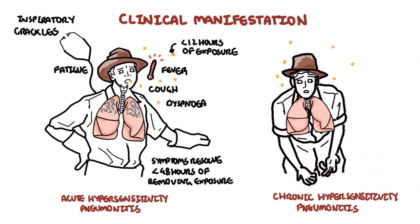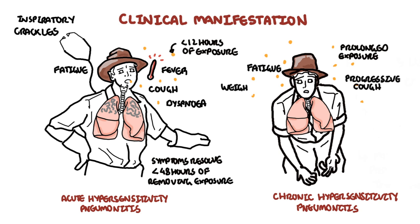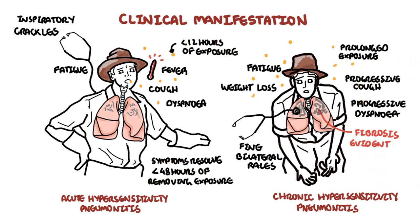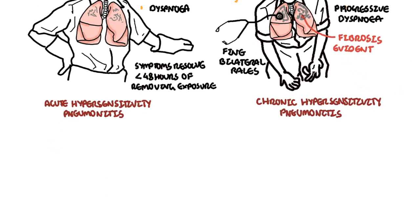Chronic hypersensitivity pneumonitis is likely after prolonged, lower-level antigen exposure. Patients present with progressive cough, fatigue, weight loss, and shortness of breath. Examination reveals fine bilateral crackles or rales. Bird fanciers' disease is an example of a chronic disorder, where bird fanciers are exposed to low levels of avian antigens for long durations causing lung changes. Chronic hypersensitivity pneumonitis is characterized by fibrosis, and at this stage, removal from exposure usually results only in partial improvement.